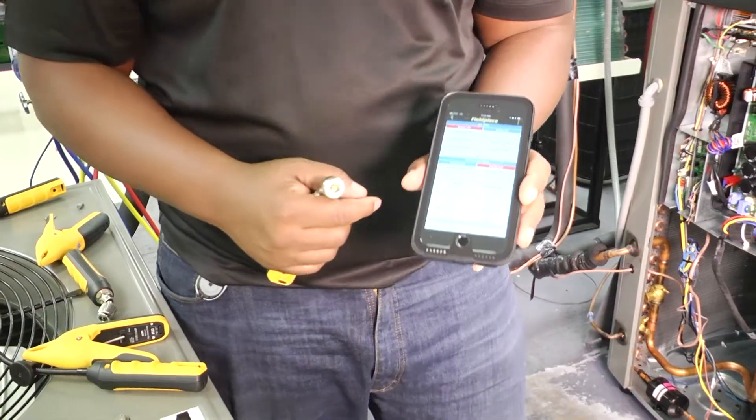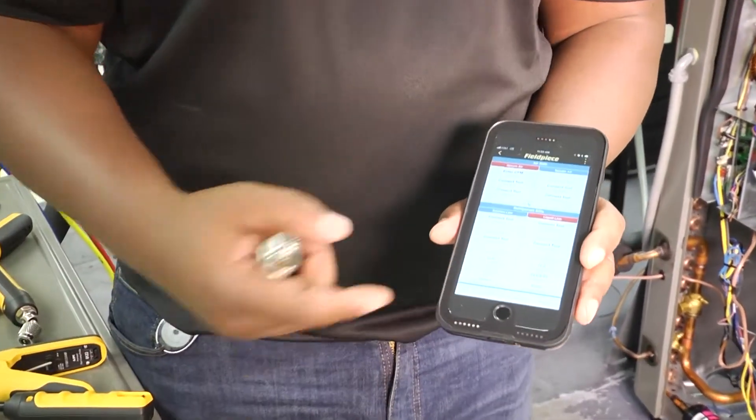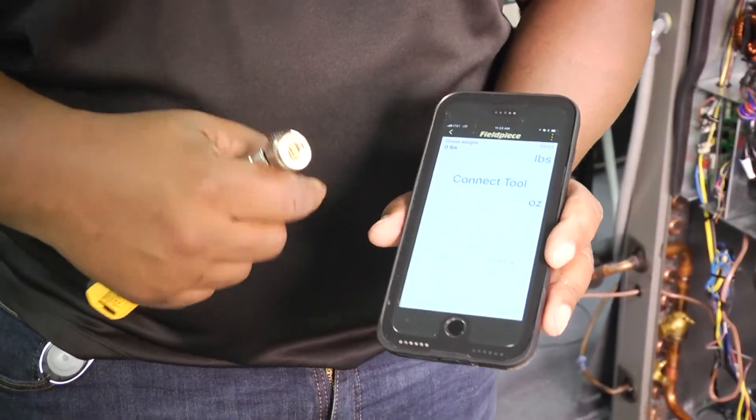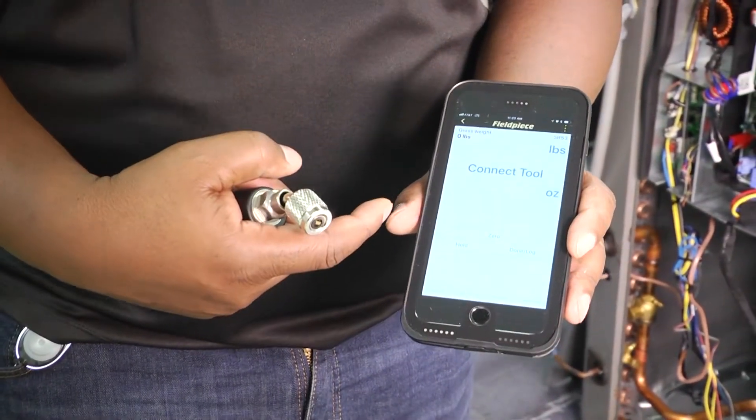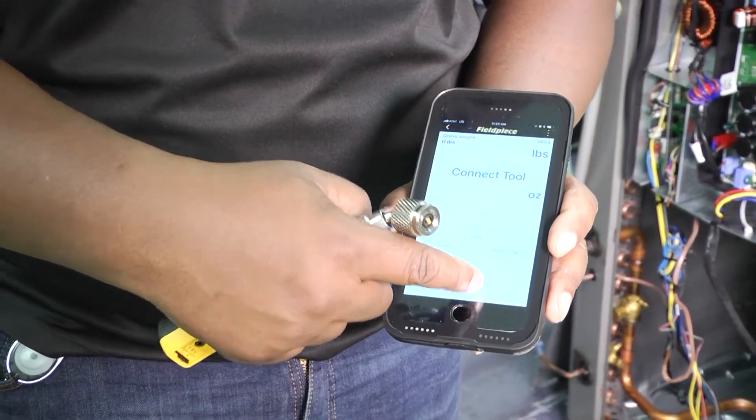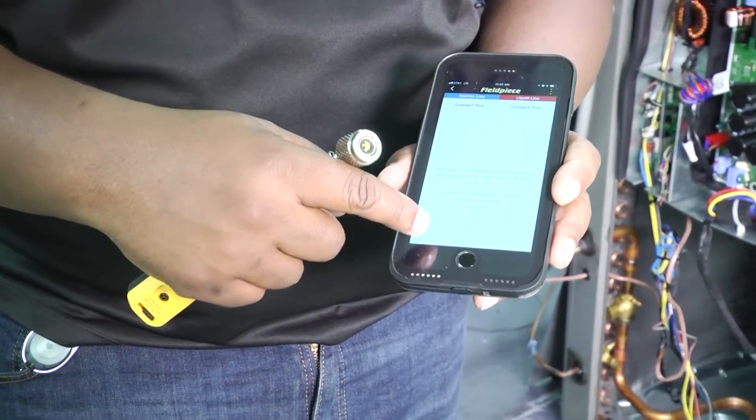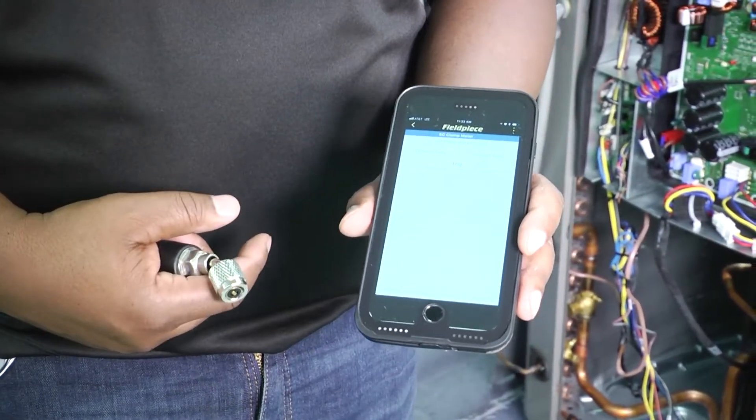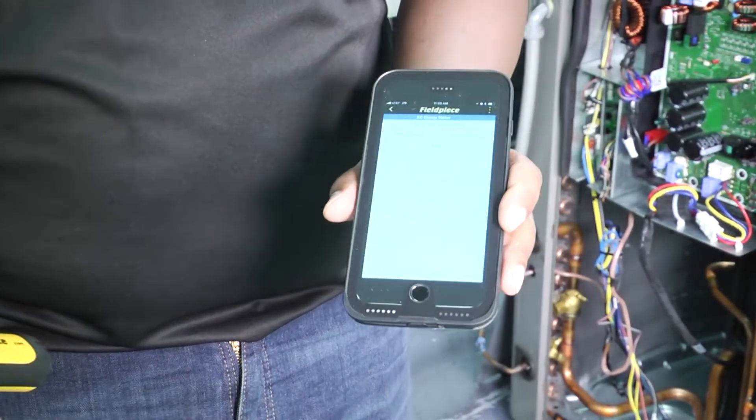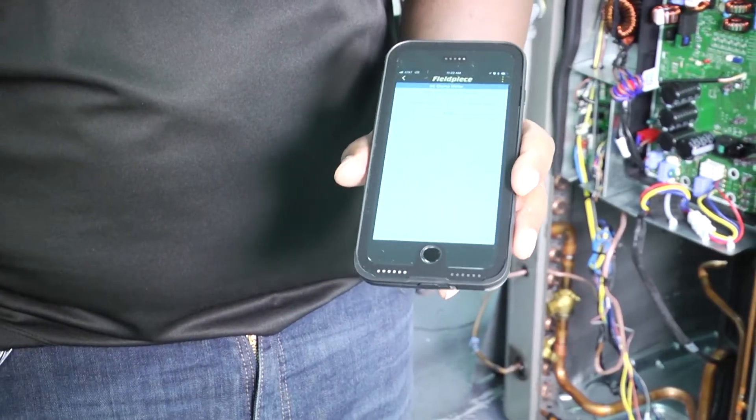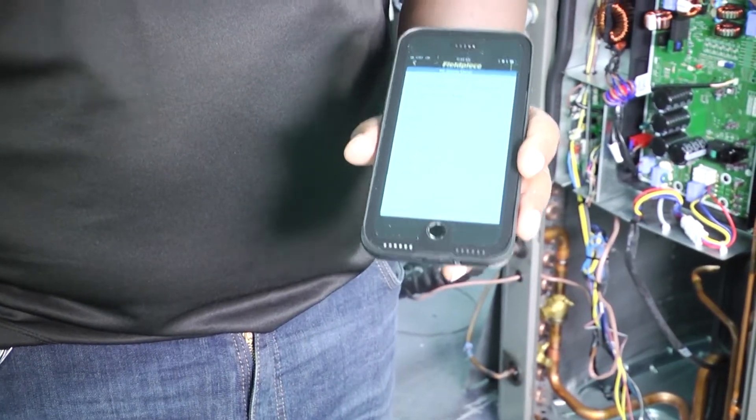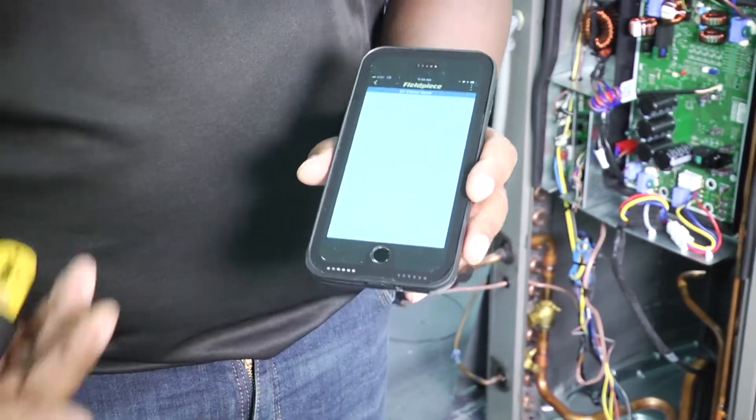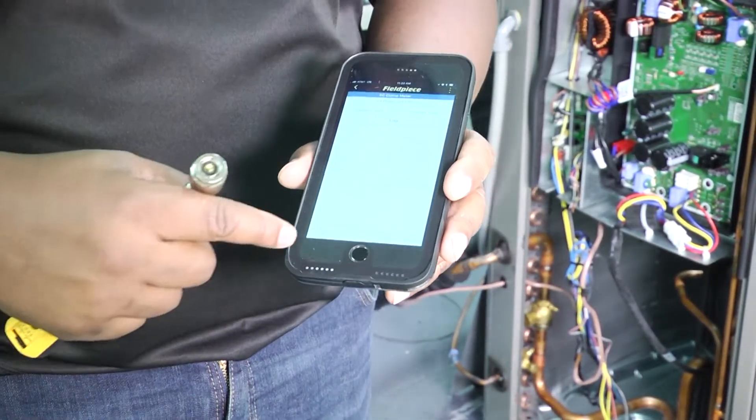A couple of different things that's cool about this app. If you have the FieldPiece Bluetooth scale, you can also connect that to this app as well. And any other devices, if you had your Bluetooth meter, you could connect the meter to this app as well. So no matter what you're doing, if you have all of the FieldPiece stuff that's all Bluetooth and wireless, this app can house all of the information and record the data that those instruments take.